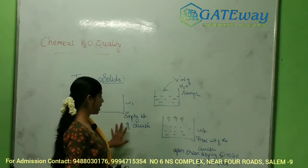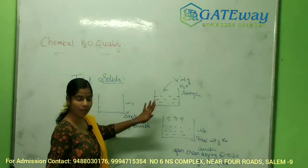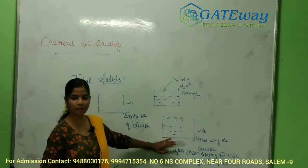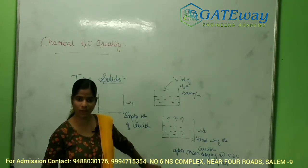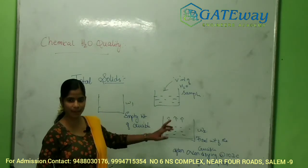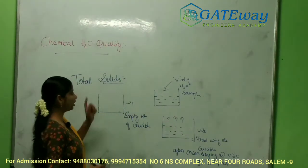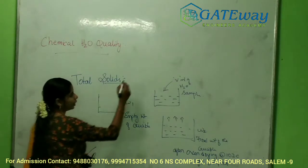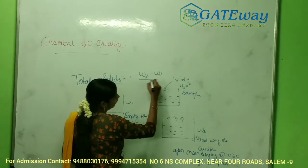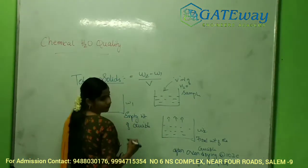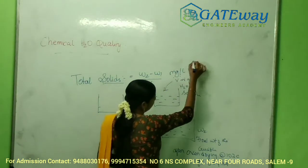W1 is the empty weight of the crucible. We add the water sample, place it in the oven at 103 degrees Celsius for 3 to 4 hours. Water evaporates and a residue remains. Total solids are calculated as W2 minus W1 divided by V, expressed in milligrams per litre or ppm.